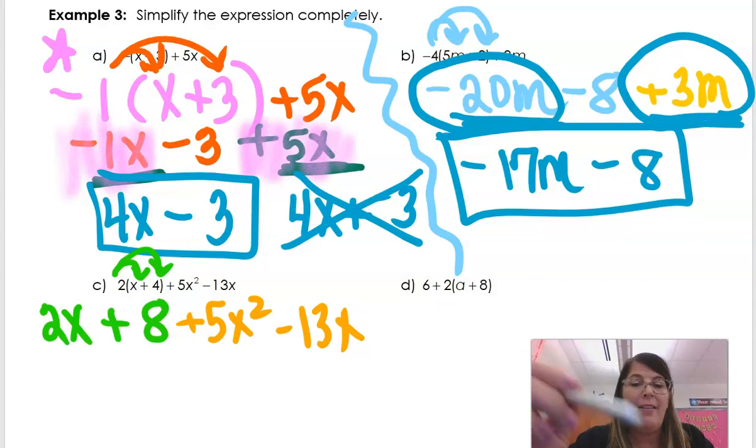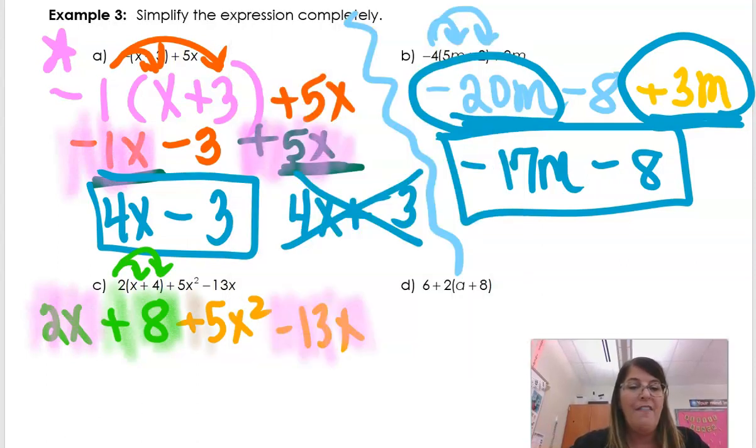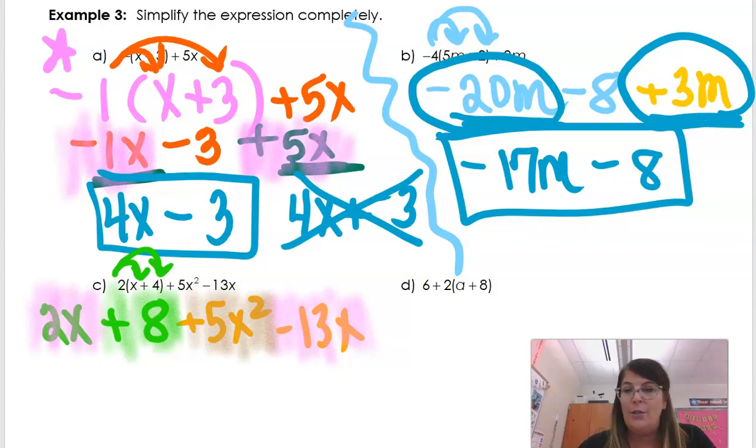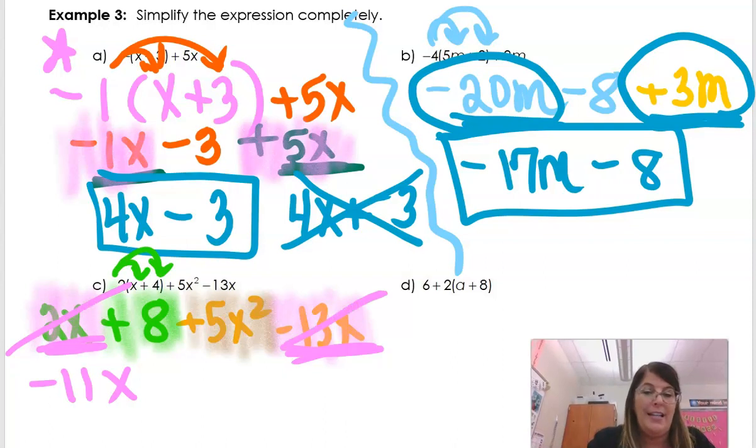So my job is to find out what are my like terms. So x's go together. So this 2x and the negative 13x, those are like terms. This positive 8 is a constant. He doesn't have any friends that he goes with. And this 5x squared is its own kind of term. Like terms have to have the same exponent and the same variable. So x and x squared are not like terms. So combine the guys that are the same. 2 minus 13, that's negative 11x. Sometimes when I'm working with these, I will put a slash through the ones that I've taken care of so I don't get confused, especially when there gets to be a lot of it.